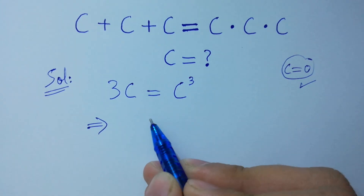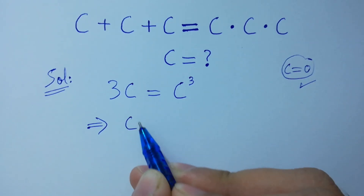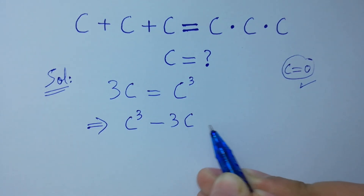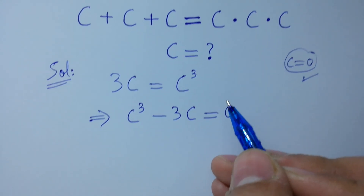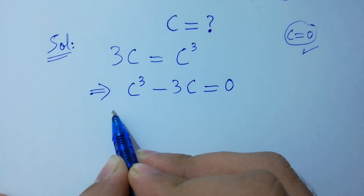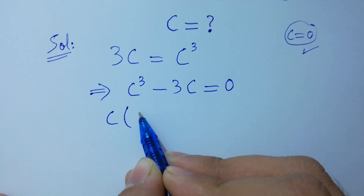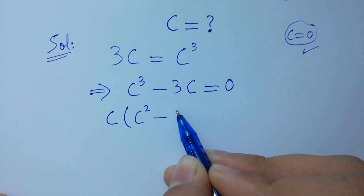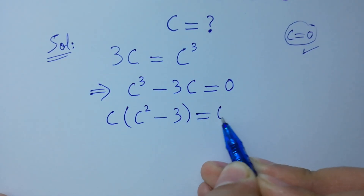This is the same as c cubed minus 3c equal to 0. Since c is common, we factor to get c times the quantity c squared minus 3 equal to 0.